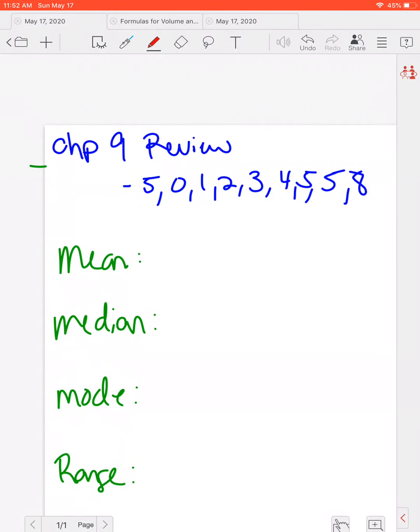So let's find the mean. Remember, mean means we're going to add them all up and divide by the number we have. So we're going to have negative 5 plus 0 plus 1 plus 2 plus 3 plus 4 plus 5 plus 5 again plus 8, which gives me a total of 23 divided by 1, 2, 3, 4, 5, 6, 7, 8, 9 numbers. 23 divided by 9 is going to give me a nice 2.56 if I round to the nearest hundredth. Remember, mean means average, so the average of all these numbers is 2.56.